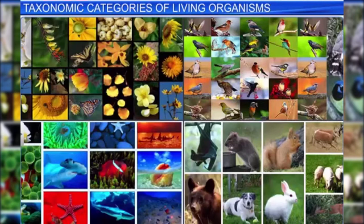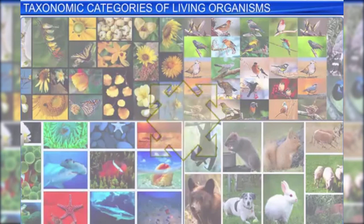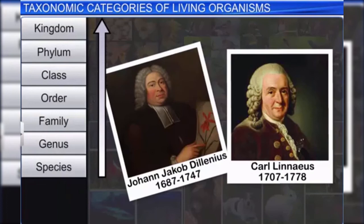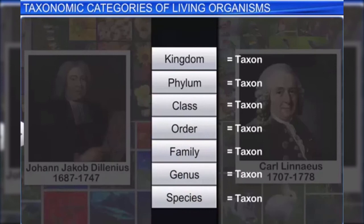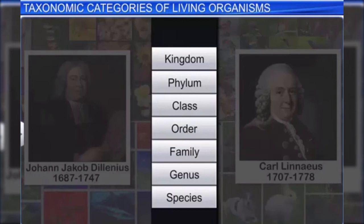Our earth is a habitat of millions of plants and animals, and new species are being discovered every day. In order to group these plants and animals based on observable characters, several taxonomists have classified them in a hierarchical structure that consists of ranks or categories. Every category is referred to as a unit of classification, commonly termed a taxon. All categories together constitute the taxonomic hierarchy.